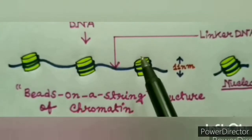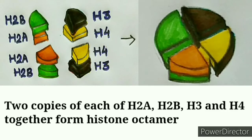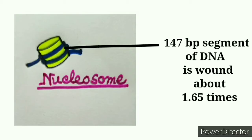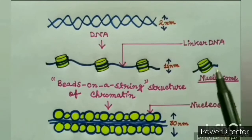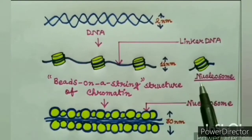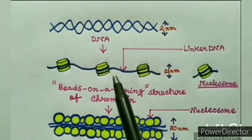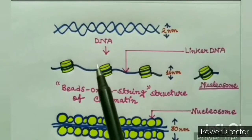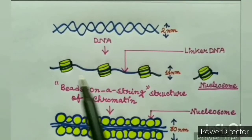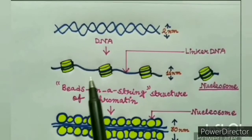These specific proteins are the histone proteins. A total of 8 histone proteins — 2 copies each of H2A, H2B, H3, and H4 — together form a histone octamer, around which a 147 base-pair segment of DNA is wound about 1.65 times, a little less than 2 complete turns, forming a single bead called a nucleosome, which is 11 nanometers in diameter. Nucleosomes are the basic repeating units of chromatin, and the beads are connected by linker DNA, which appears as the string in the beads-on-a-string structure.